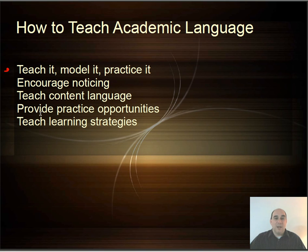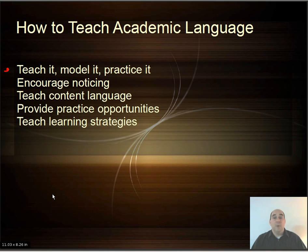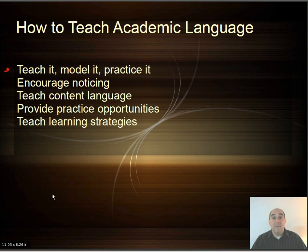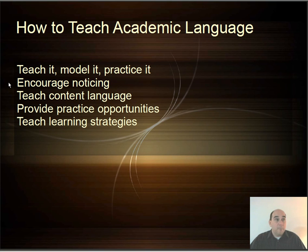How to teach academic language for your classes — again, this model you're going to see over and over: teach it, model it, practice it. You walk them through the process. If you're in a science class, you want them to see this. You explain it first, then you model it — you actually go and do it for them so they can see it. Then you give them the opportunity to practice it. The other thing you can do is encourage them to notice — have them keep an eye on what their teachers and peers are doing in other classes so they can notice these differences.